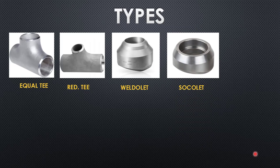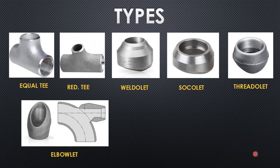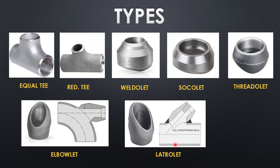The fourth type is sock outlet, used for taking branches from piping and joined by means of socket weld joints. The fifth type is thread outlet, used for taking branch connections but joined by means of threaded joints. The sixth type is elbow outlet — a special type of branch fitting used only for taking branches from elbows. The seventh type is lateral outlet, also used for branch connections, but the major difference is that the branch connections are taken at a certain inclination, whereas in other fittings the branch is taken perpendicular to the axis of the header.